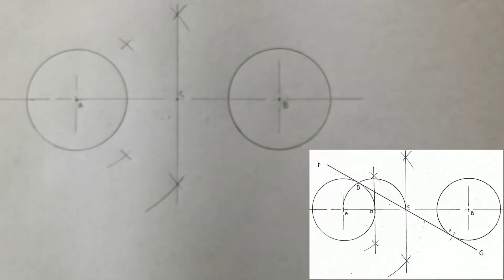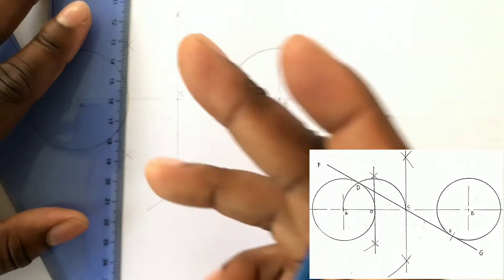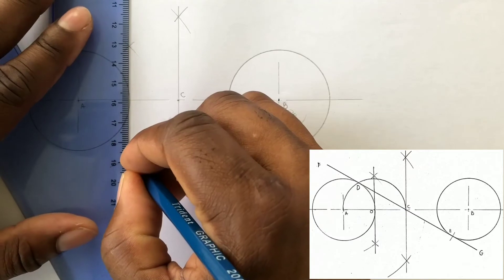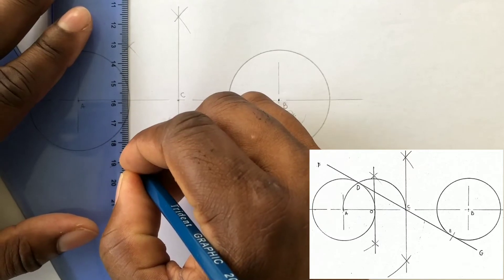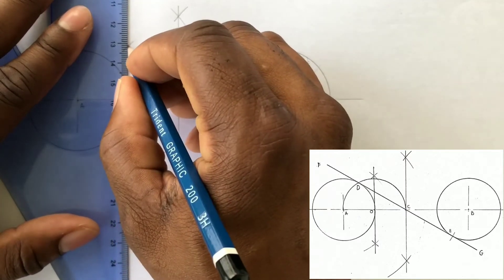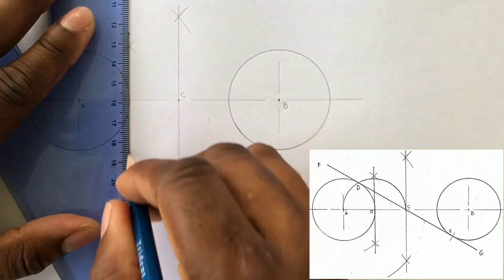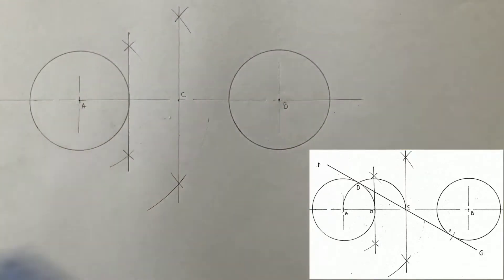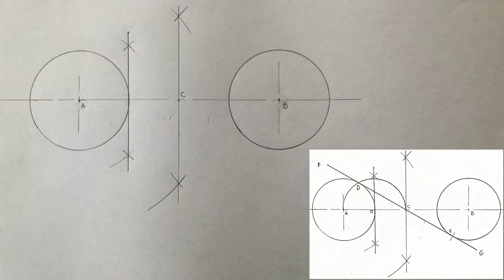Now draw a line through the intersection of both sets of arcs. This line intersected line AC at point O — label point O.